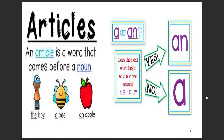Let's take a look at articles. An article is a word that comes before a noun. For example, the boy — here's our article right there, telling us this is the boy. We have the, we have a, we also have an — an apple. These are our three articles. Sometimes we don't know when to use a or an, so we have to ask ourselves: does the next word begin with a vowel sound? A, e, i, o, or u — those are our vowels.